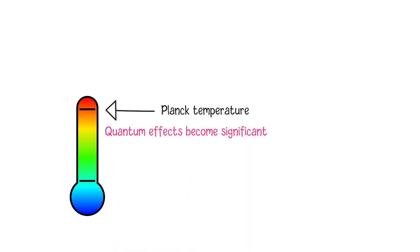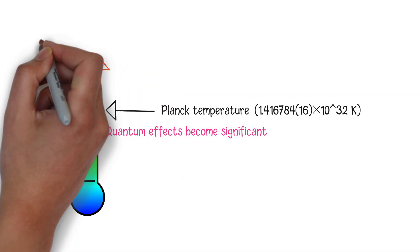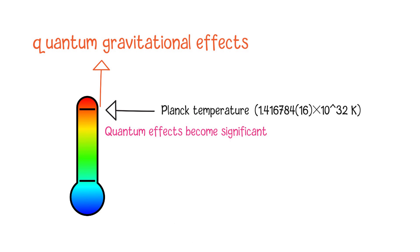The Planck temperature, which is on the order of 10 to the power of 32 Kelvin, is often considered a limit where our current understanding of physics breaks down. At temperatures approaching the Planck temperature, quantum gravitational effects become important, and our conventional notions of space and time become less meaningful.